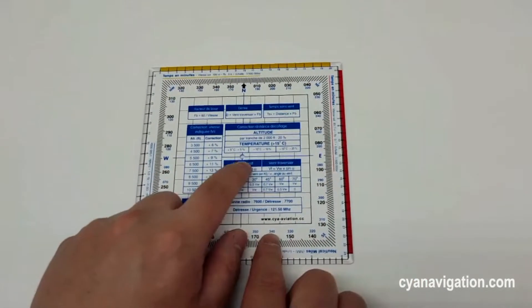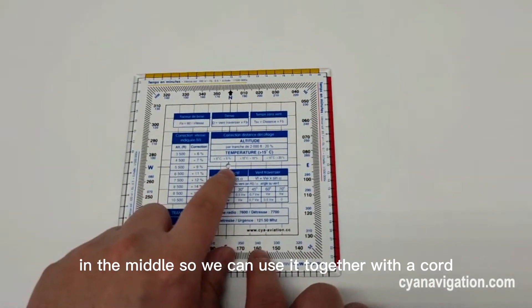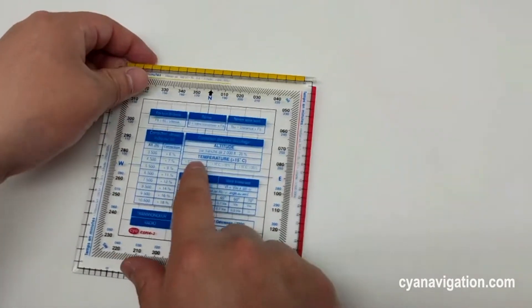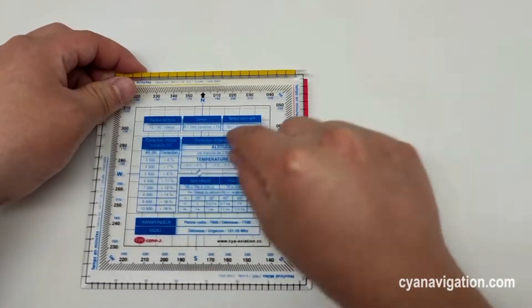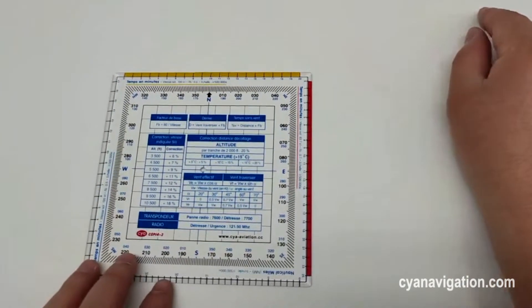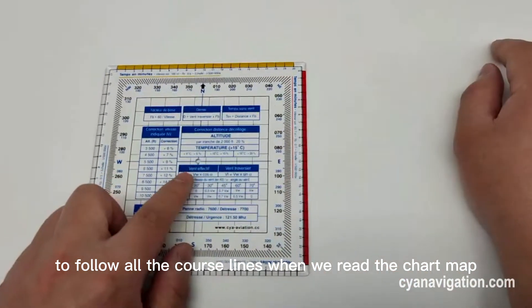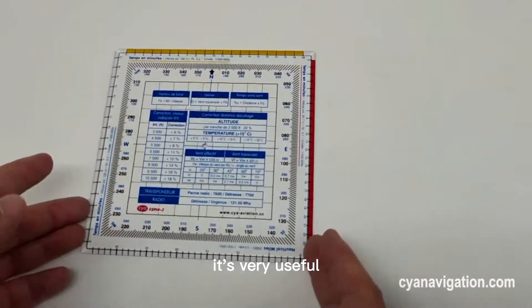And it also comes with a hole in the middle so we can use it together with a cord to measure and follow all the course lines when we read the chart map. It's very useful.